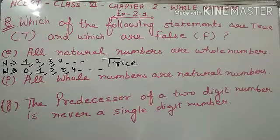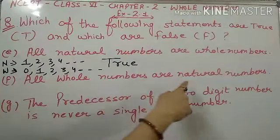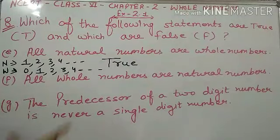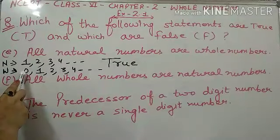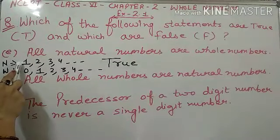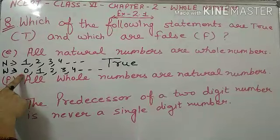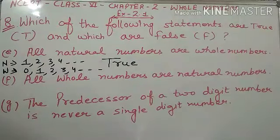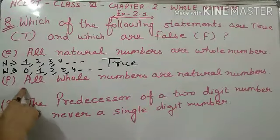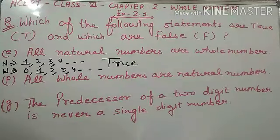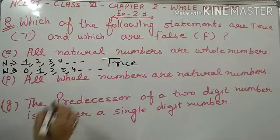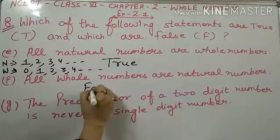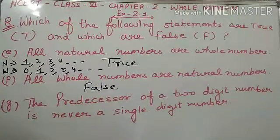Now f part: 'All whole numbers are natural numbers.' Kya sare whole numbers bhi natural numbers hootet hai? Whole numbers start hootet hai zero se, aur natural numbers start hootet hai one se. Yarni zero eek aisa whole number hai joh natural nahi hoota. Iska matlab sare whole numbers natural numbers nahi hootet hai. Toh yeh statement false hai.